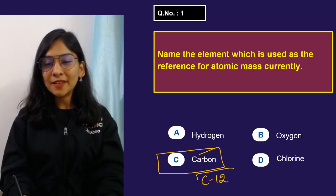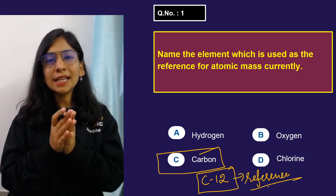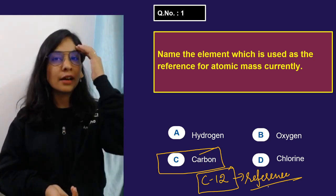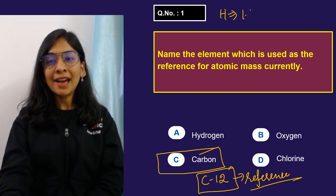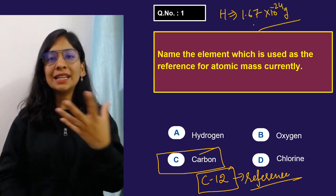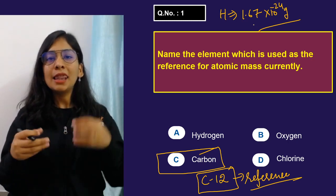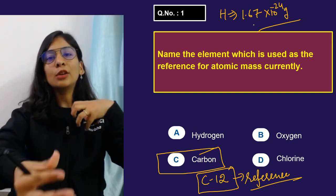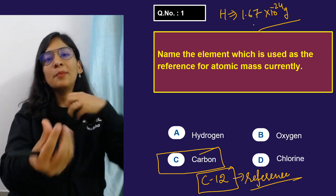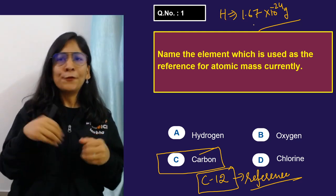Carbon — specifically in the form of C-12 — is taken as the reference. Atoms are very small; remembering hydrogen's mass as 1.67 × 10⁻²⁴ grams for every element would be a very difficult job. So scientists decided to take something as a reference and calculate the mass of atoms relative to that reference — how many times heavier or lighter a given atom is compared to it.